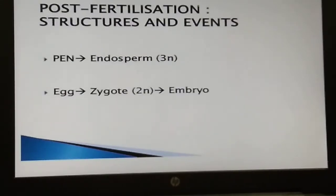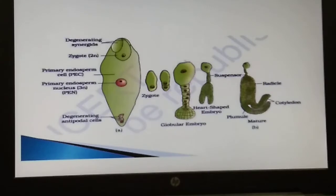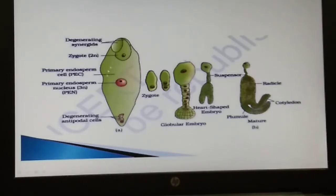Endosperm development precedes embryo development. The primary endosperm cell divides rapidly and forms a triploid endosperm tissue. The cells of this tissue are filled with reserved food material and are used for the nutrition of the developing embryo.